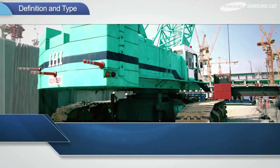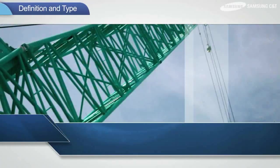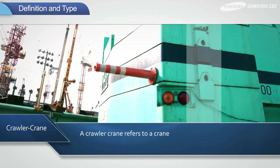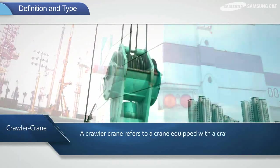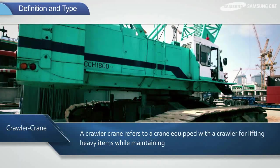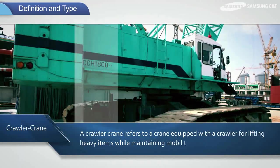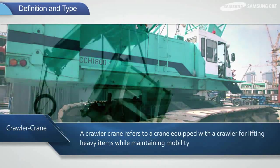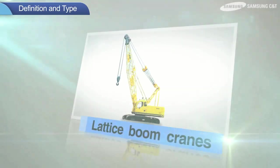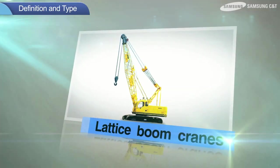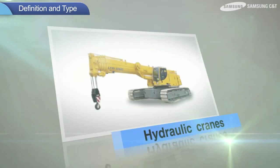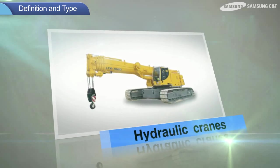First, let's take a look at the definition of a crawler crane and crawler crane types. A crawler crane refers to a crane fitted with a crawler that can be moved to any location, and it is equipped with a boom for lifting heavy items. Crawler cranes are categorized into lattice boom cranes or hydraulic cranes, depending on the boom type.